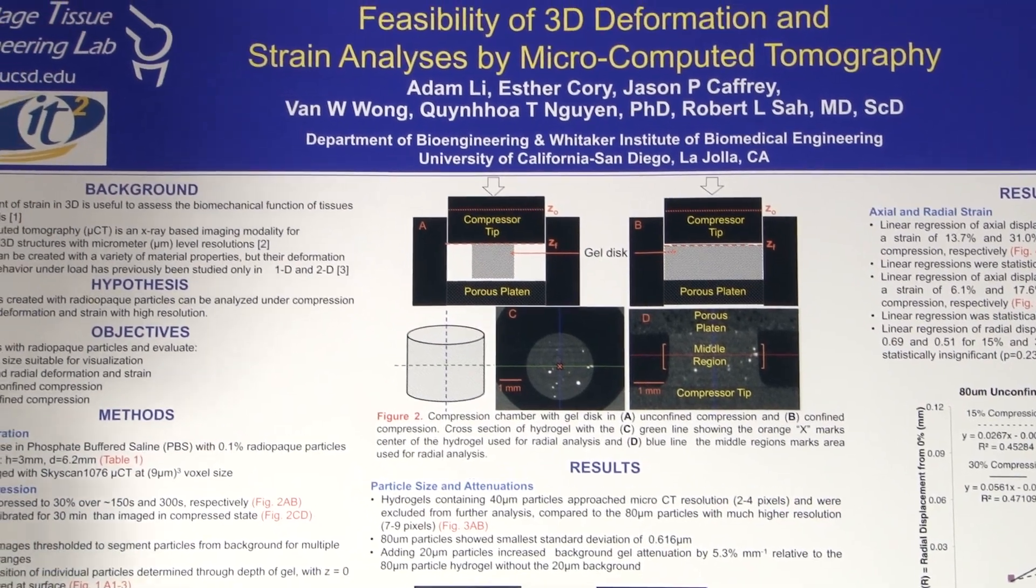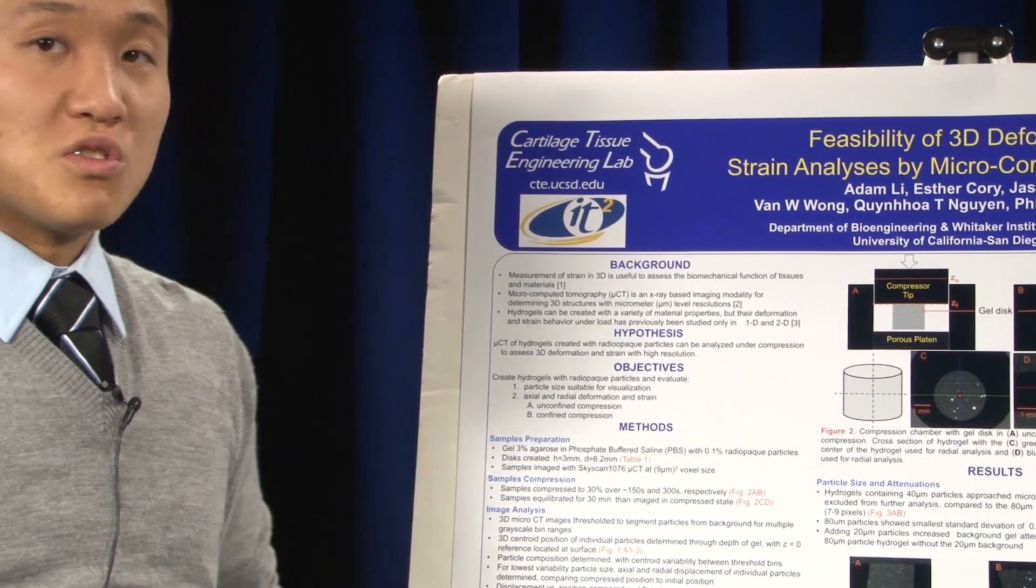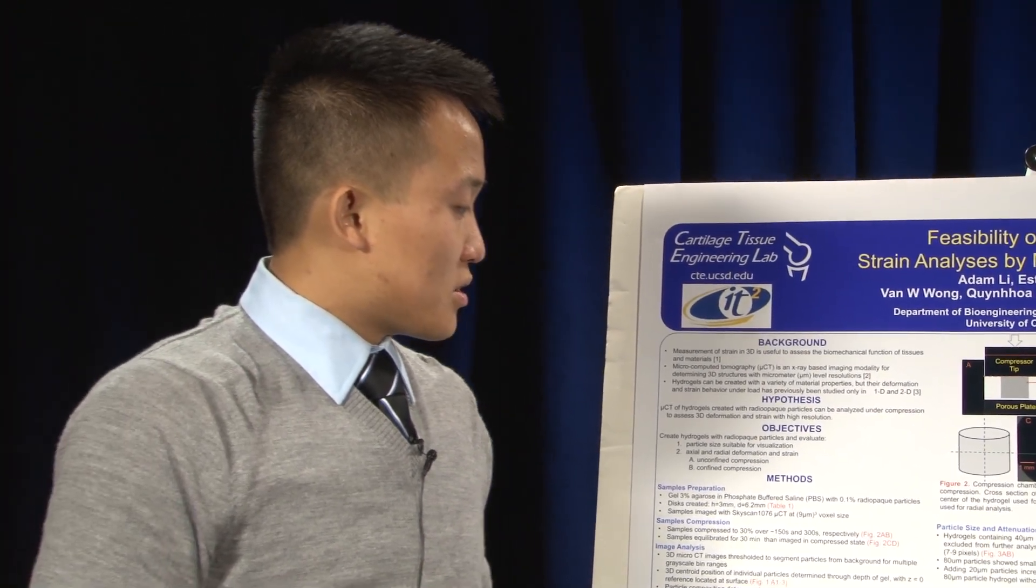Last but not least, I wanted to just summarize that we did show the feasibility of 3D deformation and strain analysis using microcomputer tomography. We obtained linear regressions for axial and radial strain analysis, and the axial strain analysis were definitely very good with very statistically significant results. We are going to improve on the radial strain analysis results as well. I would like to thank my labs, the Cartilage Tissue Engineering Lab, CalIT2, for giving me the opportunity to do this research this summer, and my PI, Dr. Robert L. Sah, and my mentor, Esther Corey, for all their help this summer. Thank you.